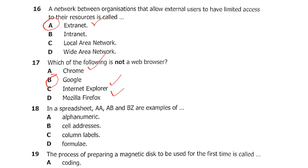Question 18: in a spreadsheet, A1, B2, AB, and BZ are examples of — A: alphanumeric, B: cell addresses, C: column labels, or D: formulae. These are cell addresses, so the answer is B.